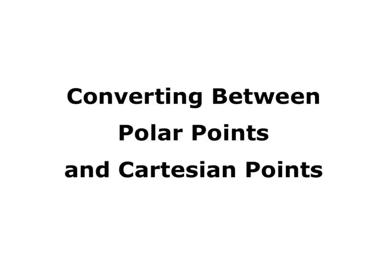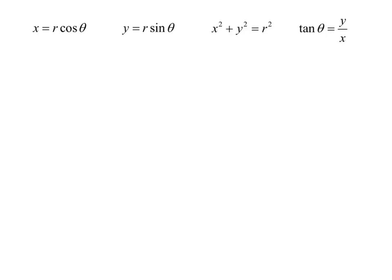In the last video, we talked about polar coordinates and how to plot points and regions using polar coordinates. In this new video, we're going to talk about converting between polar points and Cartesian points. Polar is where we have r and theta; Cartesian is when we have an x and a y. We get our four identities from basic trig: x equals r cosine theta, y equals r sine theta, x squared plus y squared equals r squared (that's the Pythagorean theorem), and tangent of theta equals y over x. We'll use these identities to convert between Cartesian and polar.